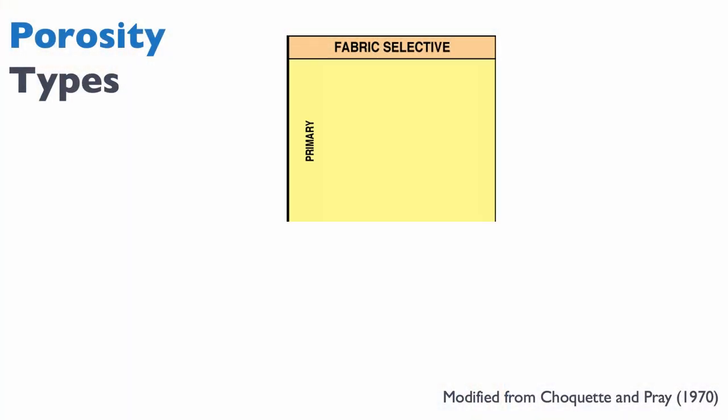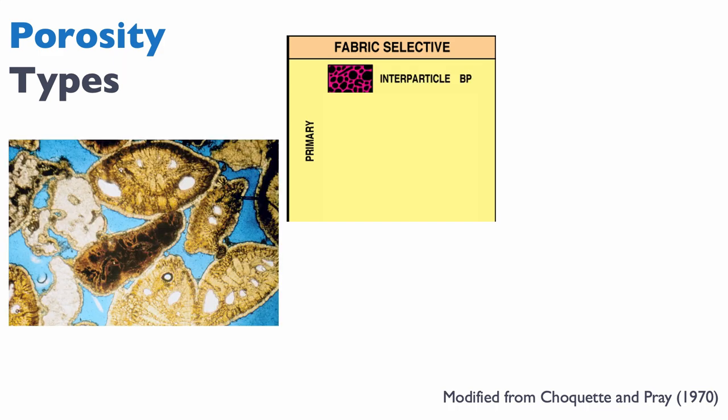Let's look at some more concrete examples of fabric selective porosity. Fabric selective porosity can be subdivided into two categories depending on when they were formed: primary porosity, formed at time of deposition of the sediment, and secondary porosity, formed after the deposition of the rock. The simplest primary type is interparticle porosity — in between the grains. This is very similar to typical porosity in clastic systems. In this thin section with benthic foraminifers, the porosity in blue indicated by the arrow is interparticle porosity.